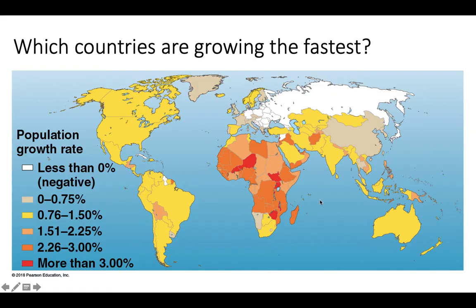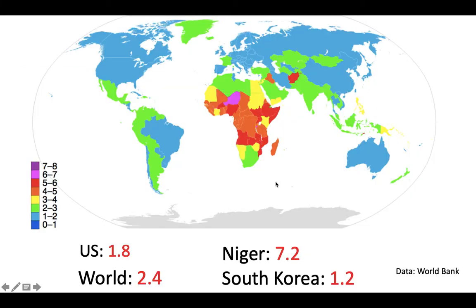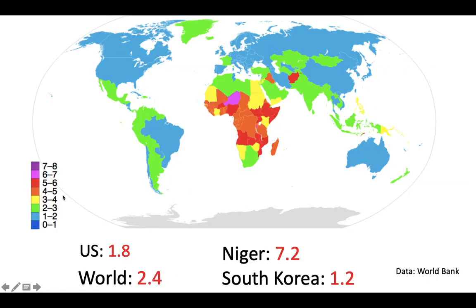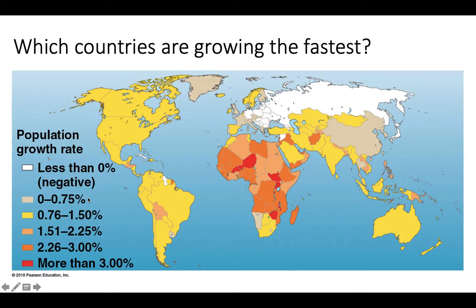Compare that to the map of growth rates I showed earlier — you should see similarities between total fertility rate and growth rates. Countries that have fast growth rates are going to have high fertility rates, meaning more babies are being added to the population. Those two metrics are closely linked.